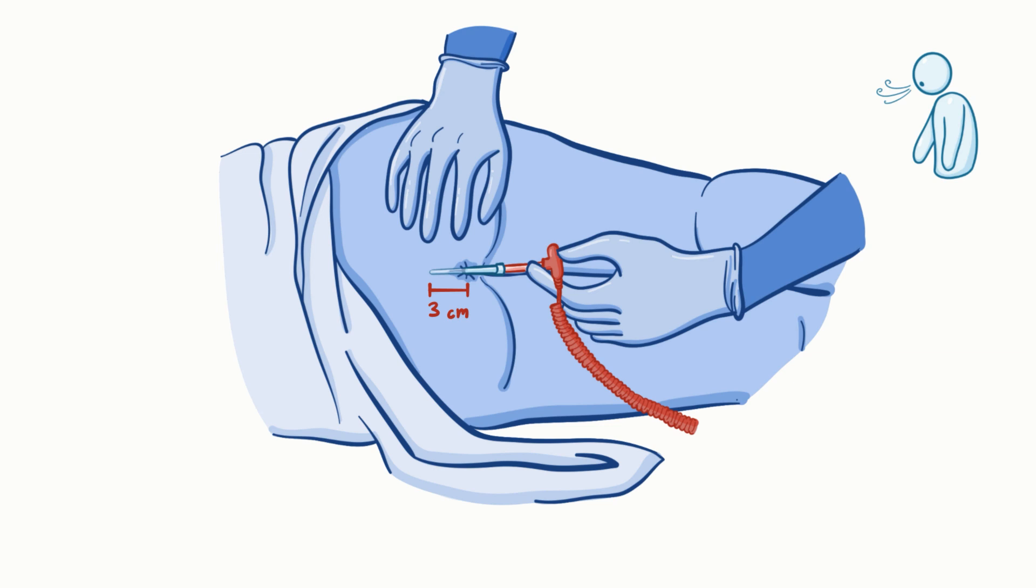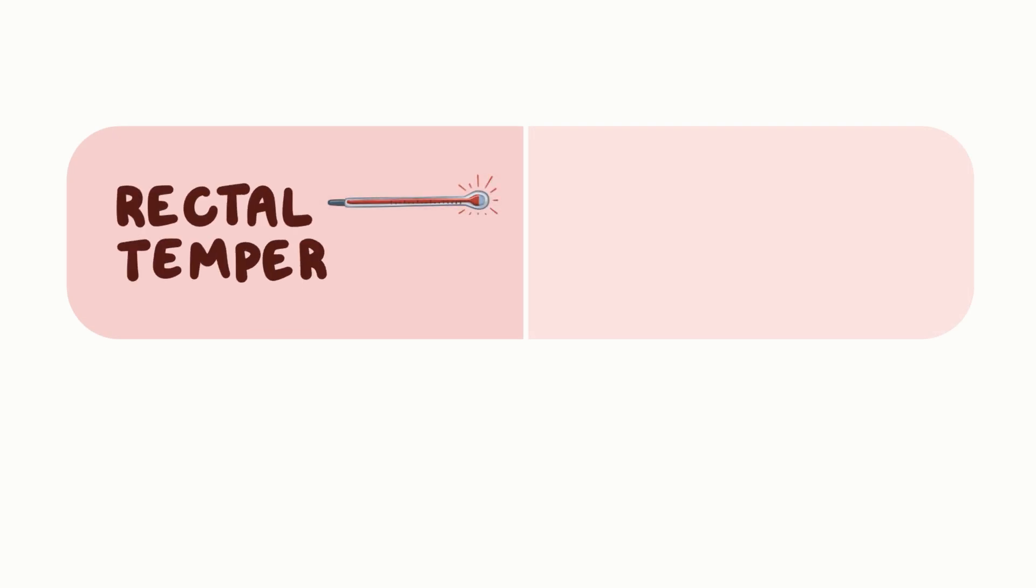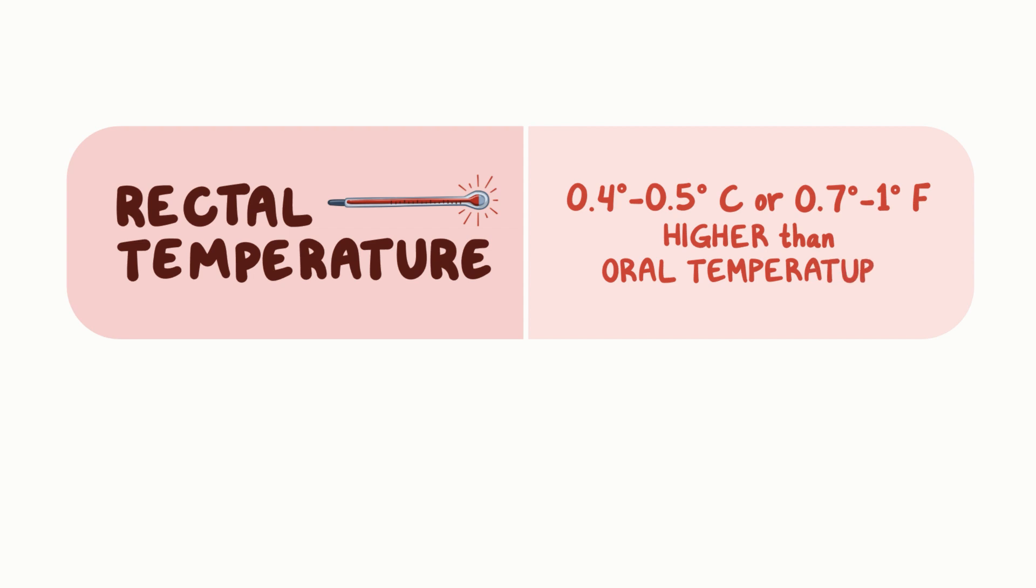When the thermometer chimes, you can remove the probe and read the temperature. Fred's rectal temperature will be 0.4 to 0.5 degrees Celsius or 0.7 to 1 degree Fahrenheit higher than Fred's oral temperature. This is the most accurate reflection of his core body temperature.